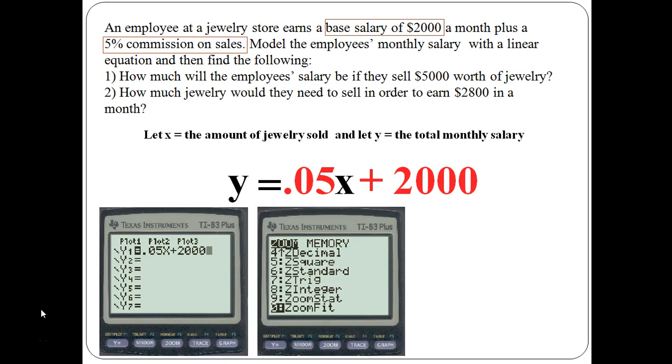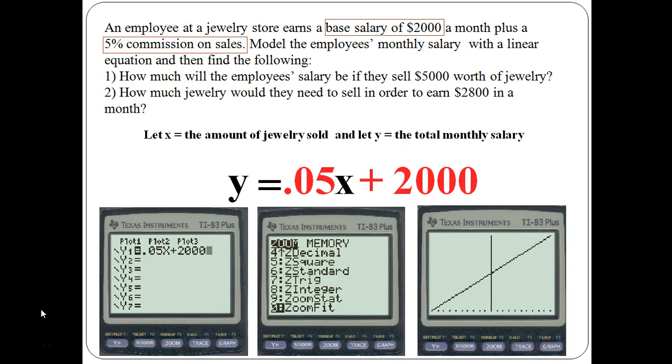The line is going up since it has a positive slope, but it doesn't look like it's going up very fast since 0.05 is a small number. The larger the absolute value of the slope, the faster the line will move up or down. So now that we have our model, we can let 5,000 equal X to find out how much the monthly salary will be. If I hit second mode, I can go to the main screen.